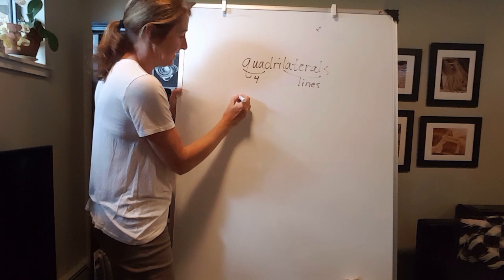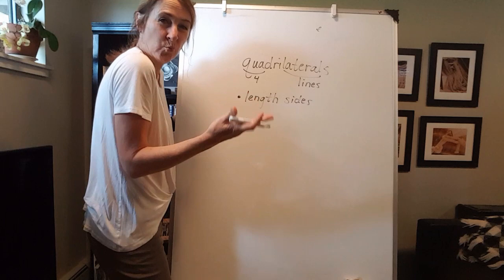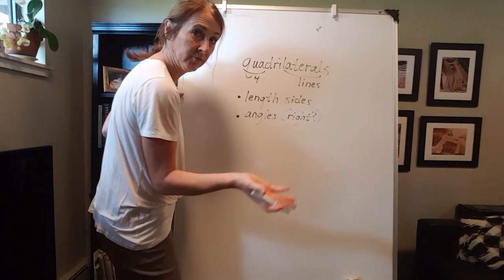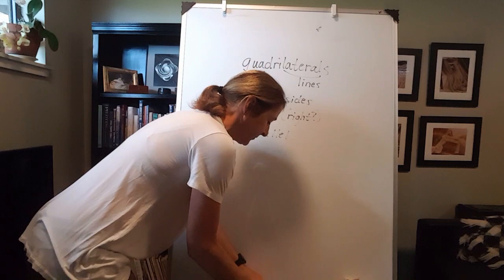They're classified using different things. For instance, you can look at the length of their sides, and that can change what kind of quadrilateral it is. You can also look at their angles and whether they're right angles or not right angles. And you can also look for what are called parallel lines. We're going to talk about parallel lines for a minute before we get started.